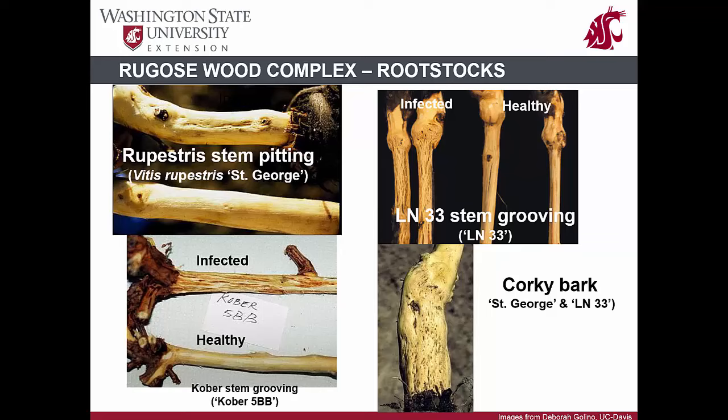Rugose wood complex affects the woody trunk of the grapevine. It is associated with vines grafted on rootstocks, as the viruses only cause symptoms on certain grape species most commonly used as rootstocks. The rugose wood complex occurs as four distinct disorders depending on the type of symptoms produced on a specific indicator plant or rootstock type. These four disorders are called Rupestris stem pitting, Kober stem grooving, LN33 stem grooving, and corky bark.